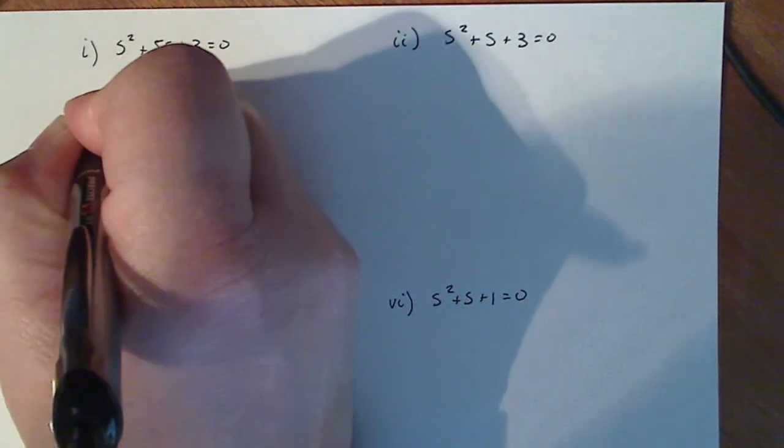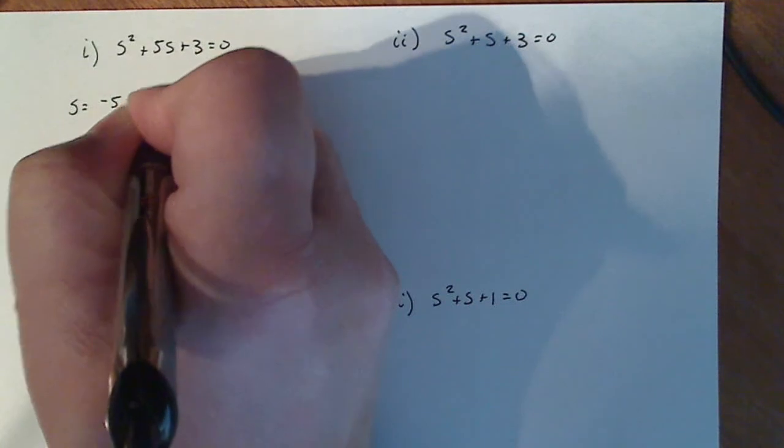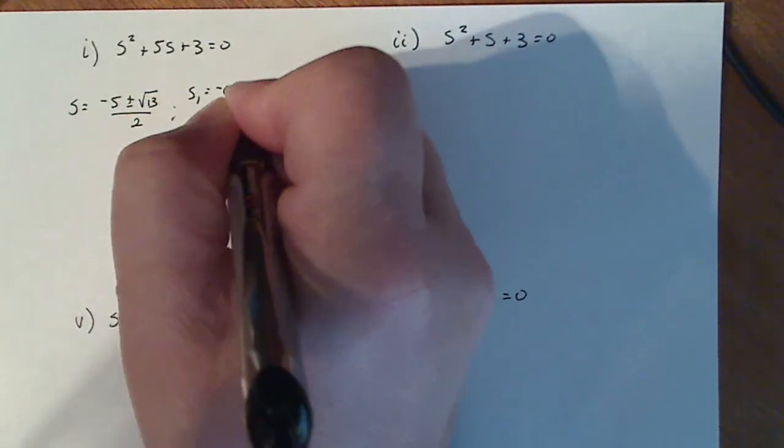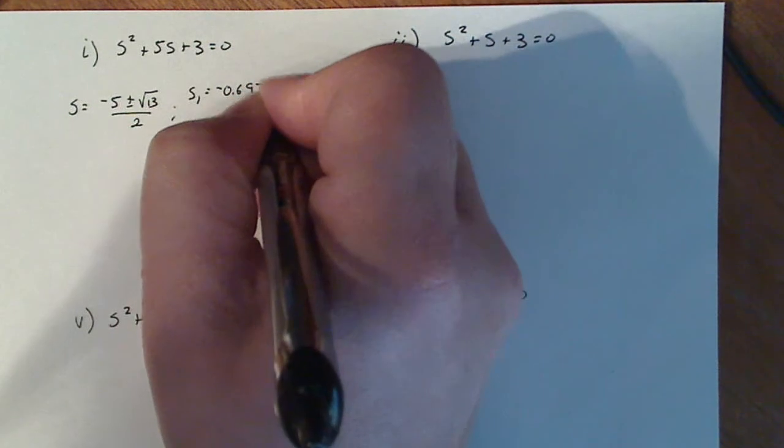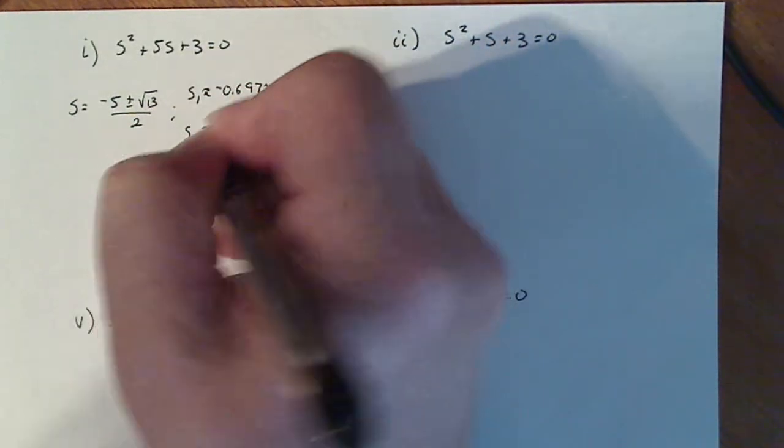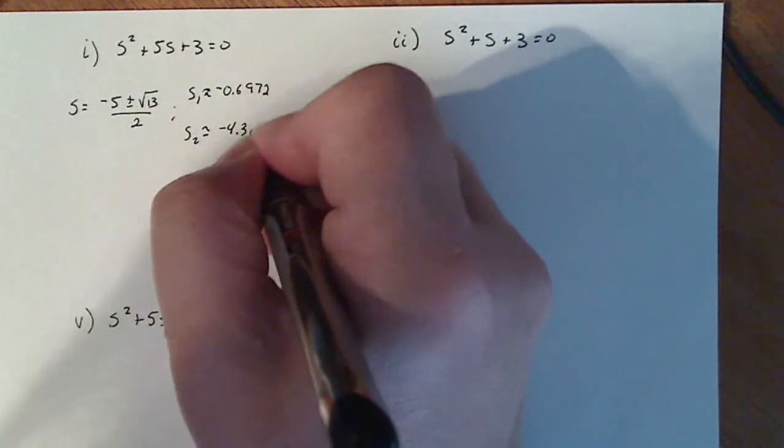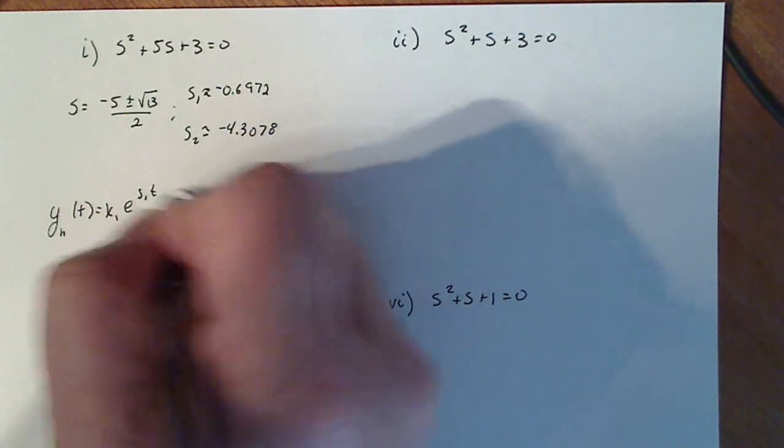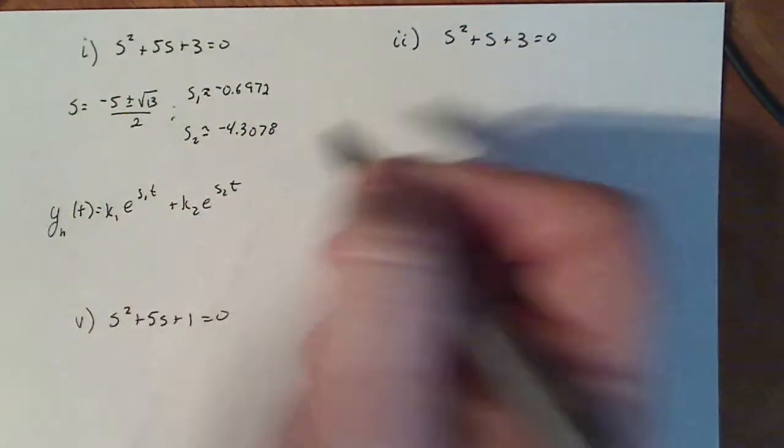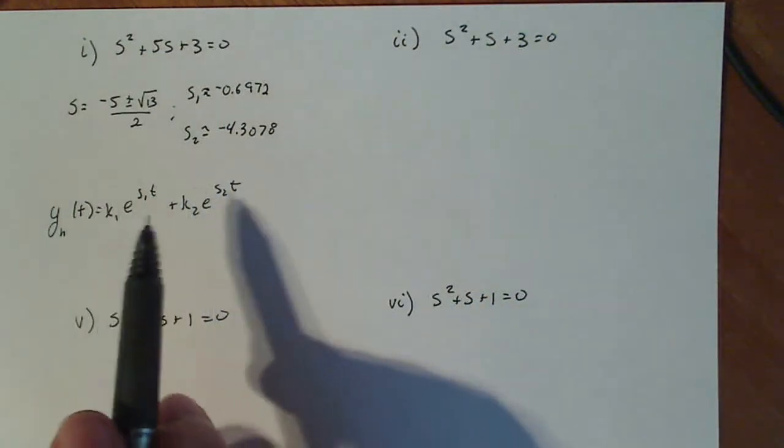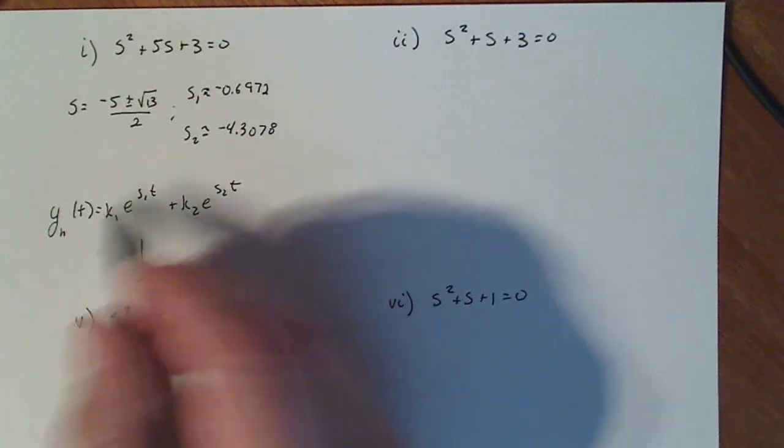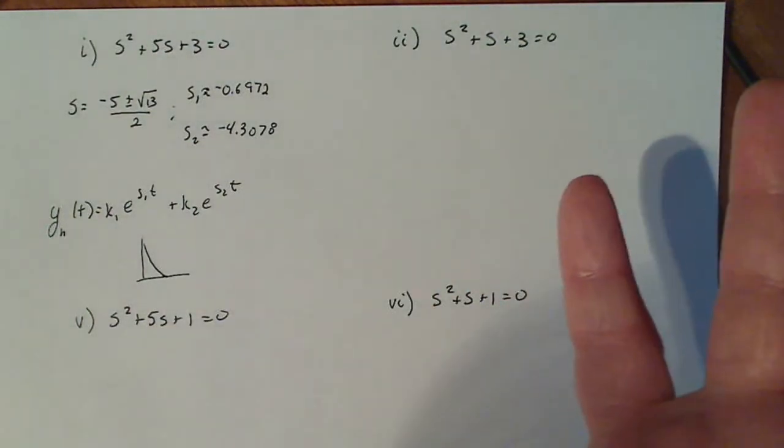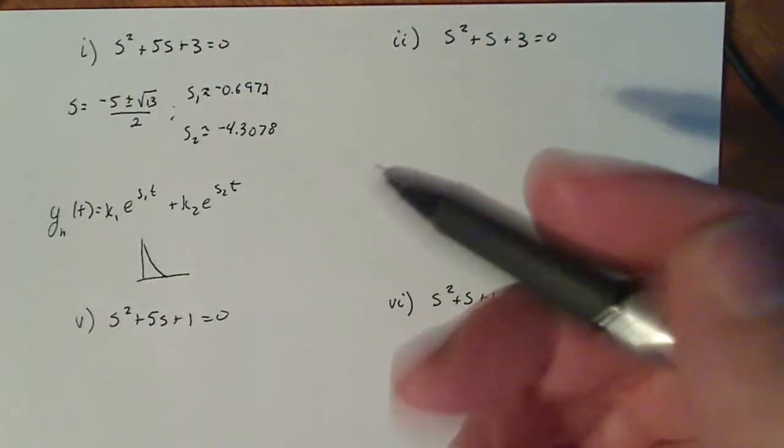Now, if I calculate s here, I get -5 ± √13 over 2. And if I estimate s₁ turns out to be approximately -0.6972 and s₂ is approximately -4.3078. So my y_h(t) looks in general to be k₁e^(s₁t) + k₂e^(s₂t). Now the combination of those two things when you graph it just turns out to be an exponential function. So initially for whatever value of k₁ and k₂, it's just going to come down pretty sharply. And then the external forcing function is going to happen and it affect the rest of the behavior here.